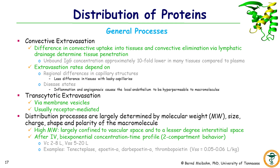Examples include erythropoietin alpha, darbepoetin, tenecteplase, and thrombopoietin, which have a volume of distribution at steady state between 0.05 and 0.06 liters per kilogram.